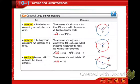Alright so arcs and arc measure. So we have a minor arc is the shortest arc connecting 2 endpoints on a circle. The measure of a minor arc is less than 180 and equal to the measure of its related central angle. A major arc is the longest arc connecting 2 endpoints on a circle. The measure of a major arc is greater than 180 and equal to 360 minus the measure of the minor arc with the same endpoints. A semicircle is an arc with endpoints that lie on a diameter. So the measure of a semicircle is 180.